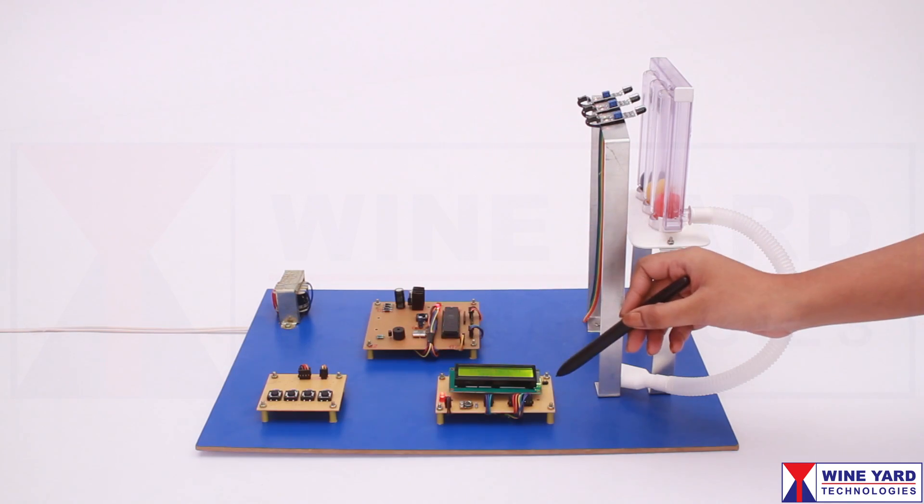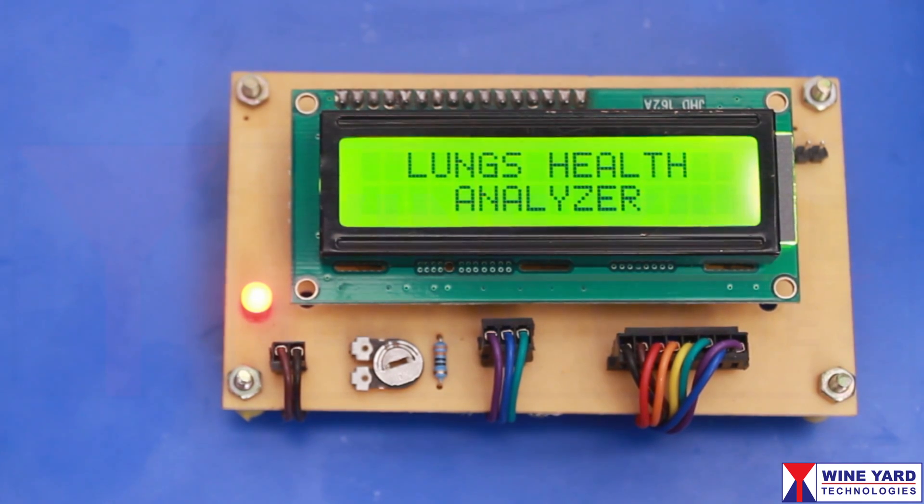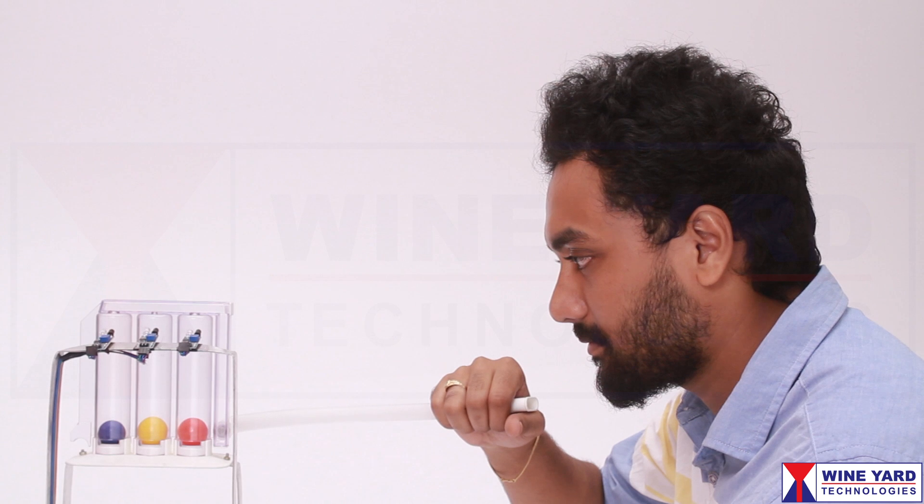This LCD displays the air capacity of the lungs and shows the health condition. Let us see the functionality of the system.